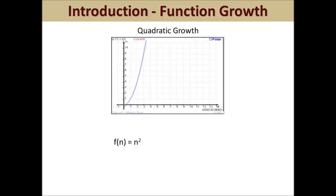If we have f of n equal to n squared, then we see our parabola — at least the half of it that's in quadrant 1 of our graph. Here we can see that y grows exponentially faster than x when x is greater than 1. Therefore, when f of n equals n squared and n is equal to 5, we know that f of 5 is equal to 25.